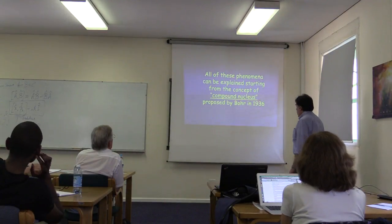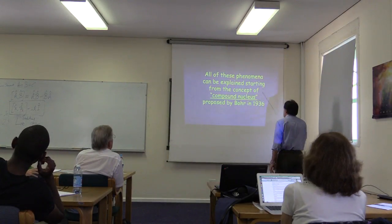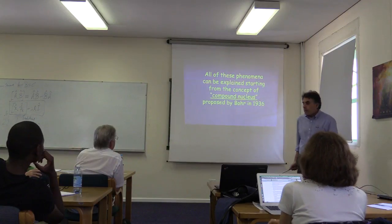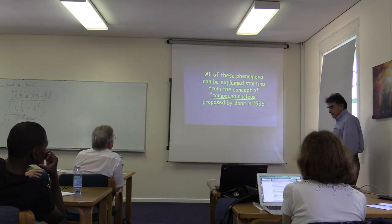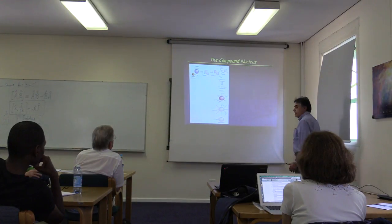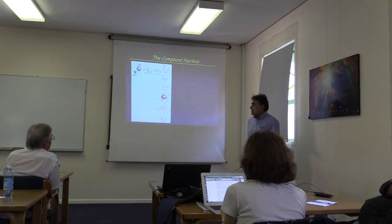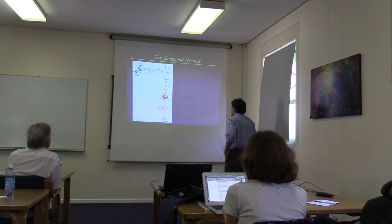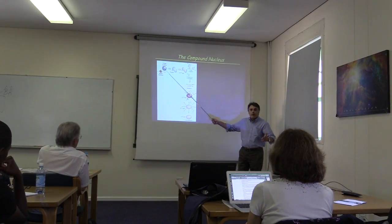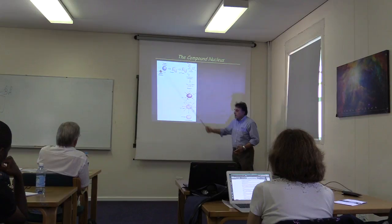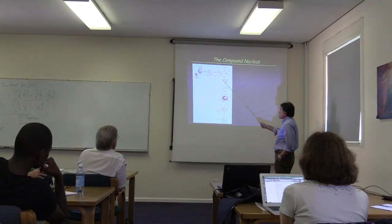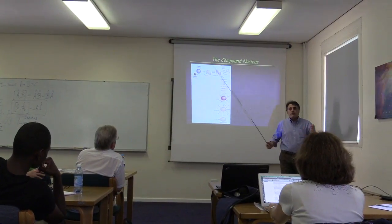So all of these phenomena can be explained from the concept of compound nucleus. This was a key, it was a real breakthrough in 1936. How all of these phenomena could be explained with one simple idea. The one simple idea is that the reaction occurs in a very specific way. We have a particle bombarding the nucleus and the idea is that the reaction occurs in two different stages.